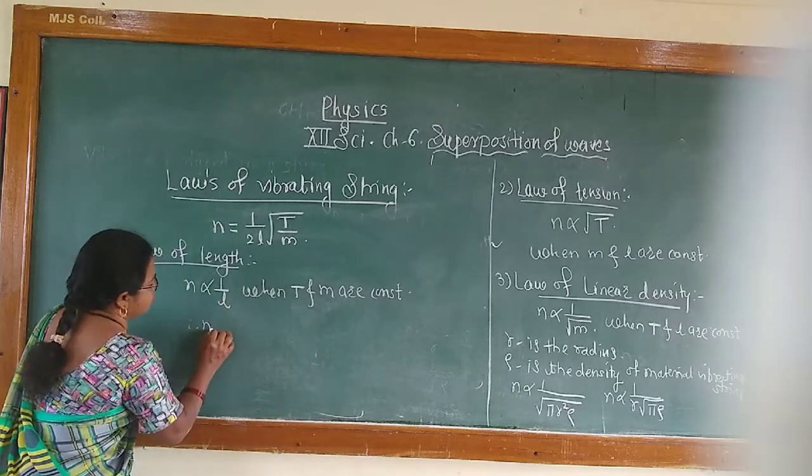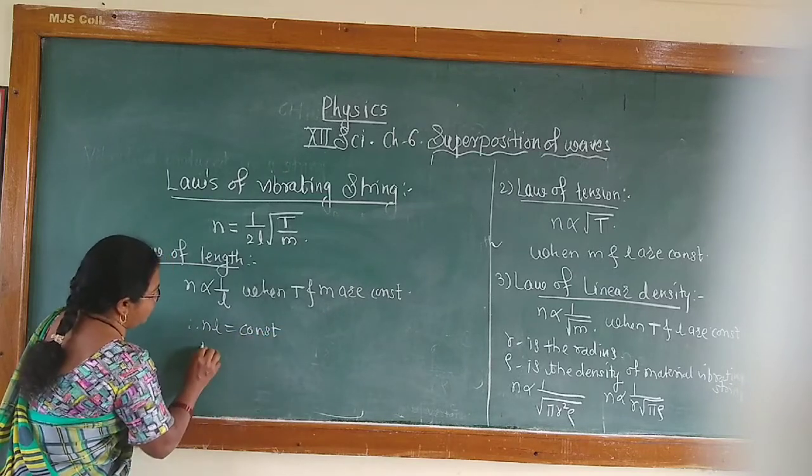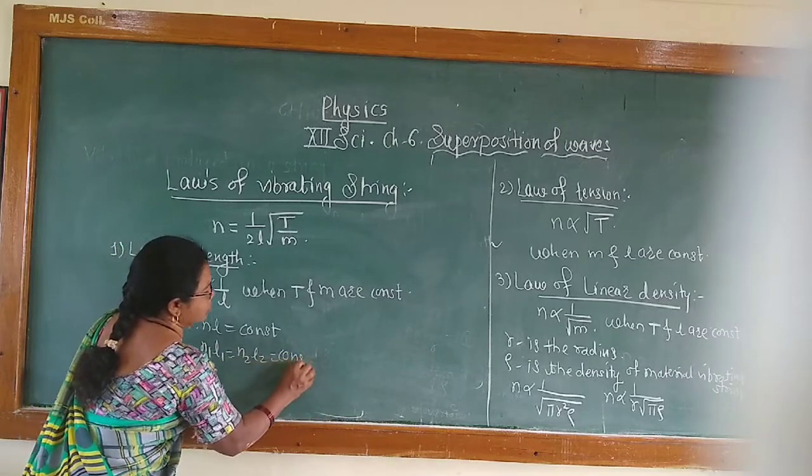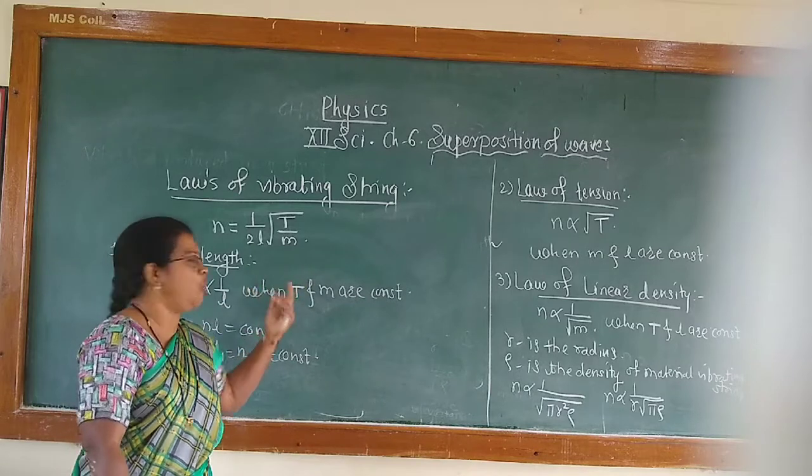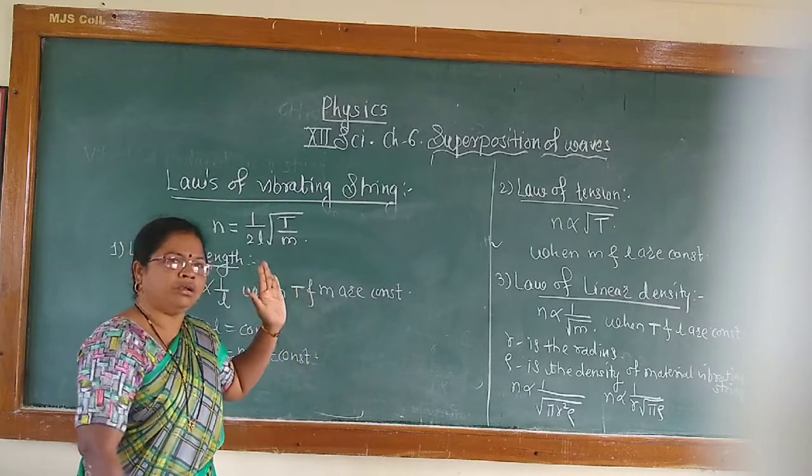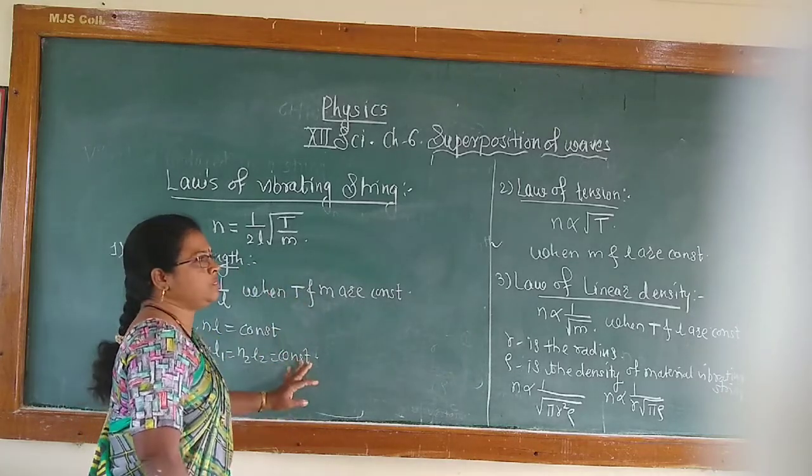That means we can write N into L is equal to constant, or N1 L1 is equal to N2 L2, which is equal to constant. We can prove this law by using sonometer. So this is the first law.